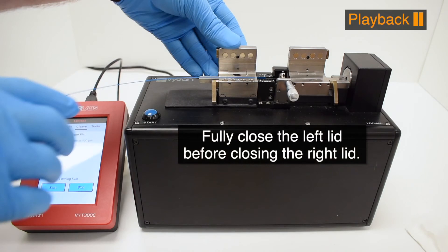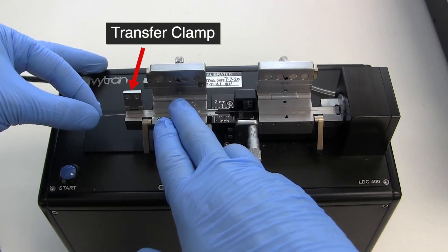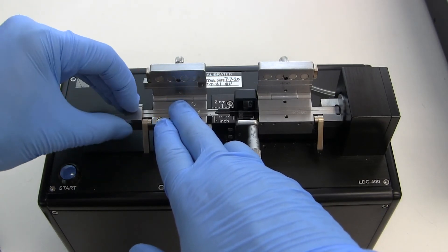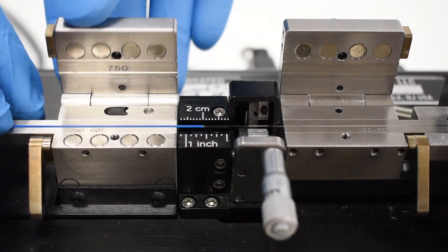The fiber holding block lids should always be closed left to right. If a transfer insert is used, close the transfer clamp first. Lower the left lid and gently lift the cam lever to fully close it.